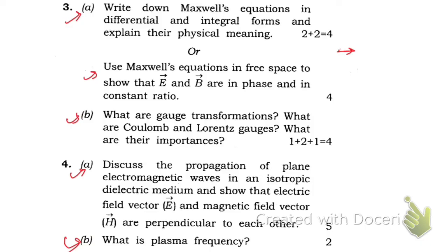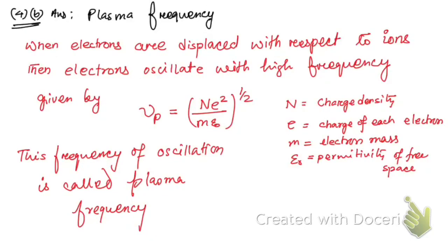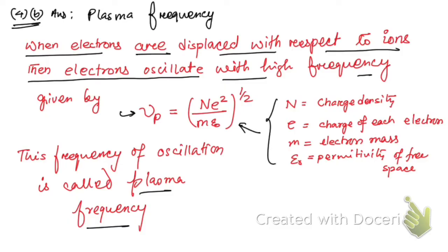Now, what is plasma frequency? Let me answer this. This is the answer to question number 4b. When electrons are displaced with respect to ions, then electrons oscillate with high frequency given by this formula. This frequency is known as plasma frequency, and these are the meaning of the terms that I have used here.